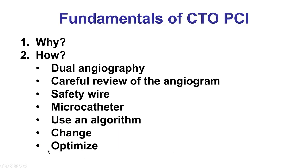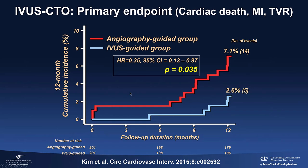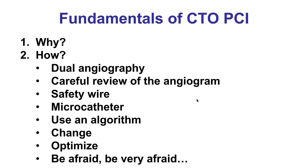However, once we cross the CTO, the procedure is not over. We need to take the time to optimize the result. Trials have shown that using IVUS for stent optimization is associated with a lower incidence of MACE at 12 months, so we need to perform intravascular imaging and achieve the best possible result with as large a stent expansion as safely possible.